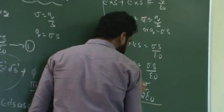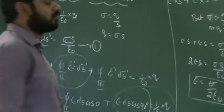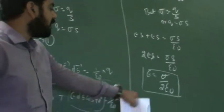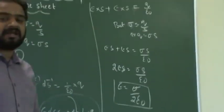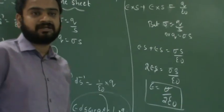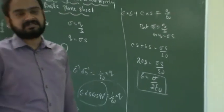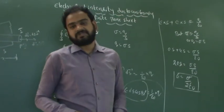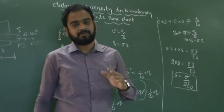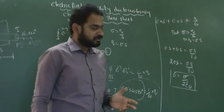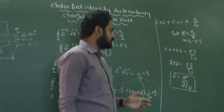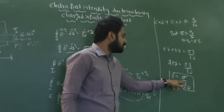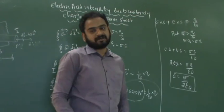So this is the final expression for electrical field intensity. The electrical field intensity at any point when charges are distributed in a thin plane sheet is E equals sigma by 2 epsilon naught.